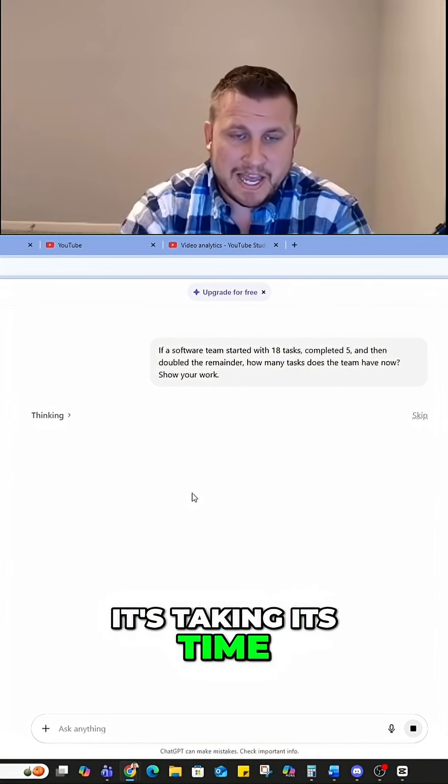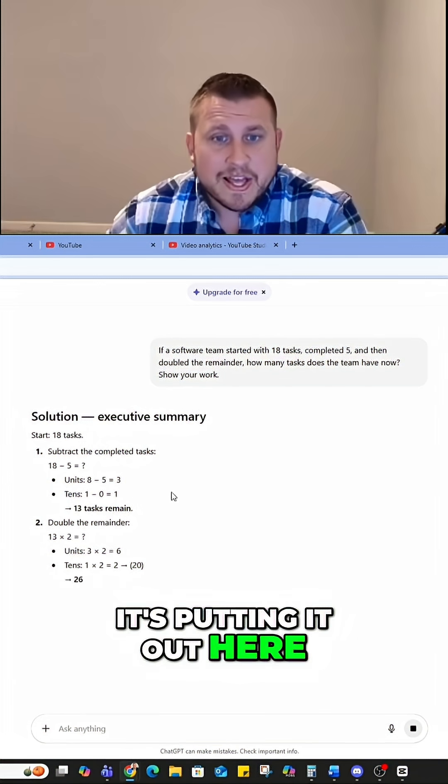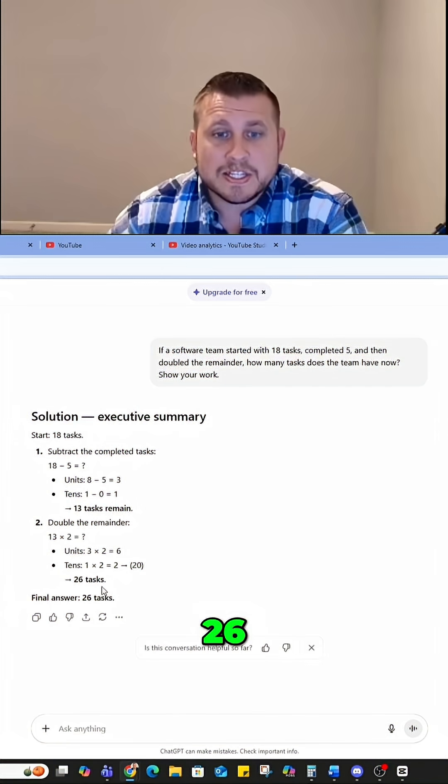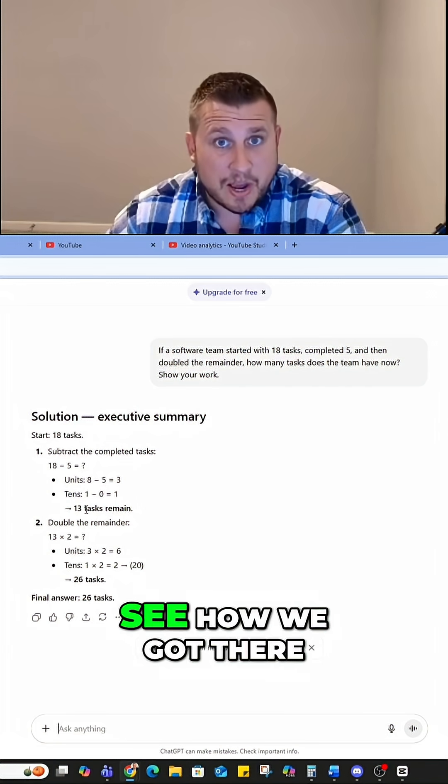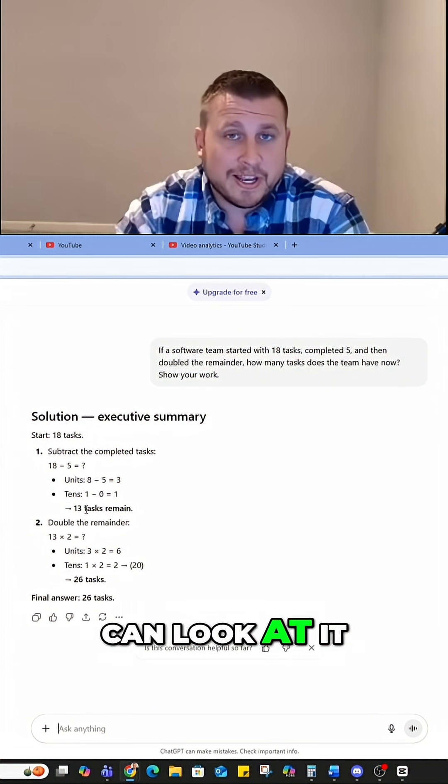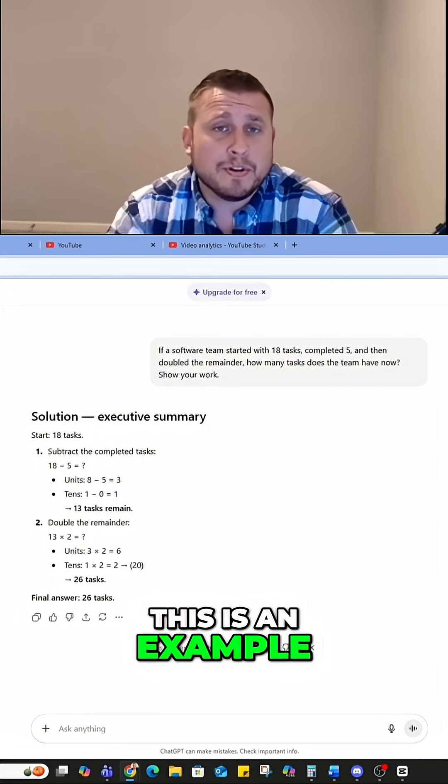So now it's thinking, right? It's taking its time. It did that before it just generated it, but now it's putting it out here. It's actually going a little bit deeper to let us know how it got there. We still got the right answer 26. It did go a little bit deeper to see how we got there. So I'm able to trust this information because I can look at it and I can quickly verify that answer. So now that I can trust this process, this is an example of how you can debug.